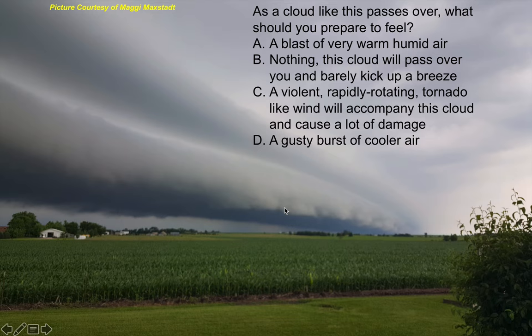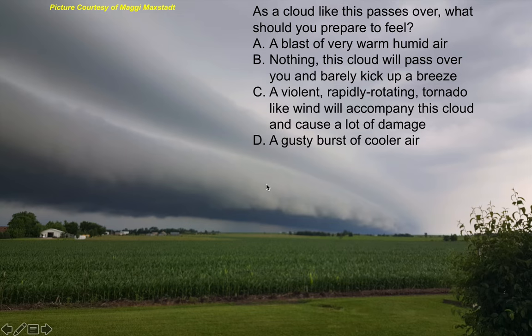After the shelf cloud passes, you get a burst of cooler air that comes from the downdraft of the thunderstorm — we call it outflow. This shelf cloud forms on what's called an outflow boundary. If I were to cut a squall line in half from top to bottom, the shelf cloud is the leading edge, right next to the ground, while the anvil spreads out aloft.